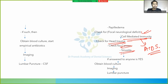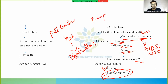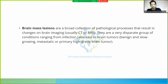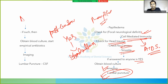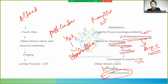If there is altered mental status, also obtain blood culture, start empirical antibiotics immediately, then do imaging and lumbar puncture. CNS mass lesion refers to a broad collection of pathological processes resulting in changes on brain imaging — ranging from infection to abscess to brain tumor.